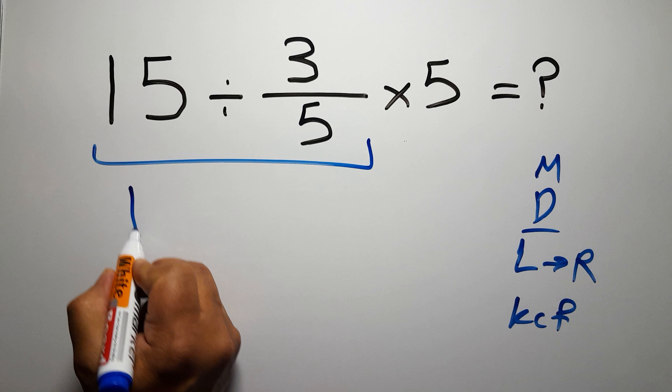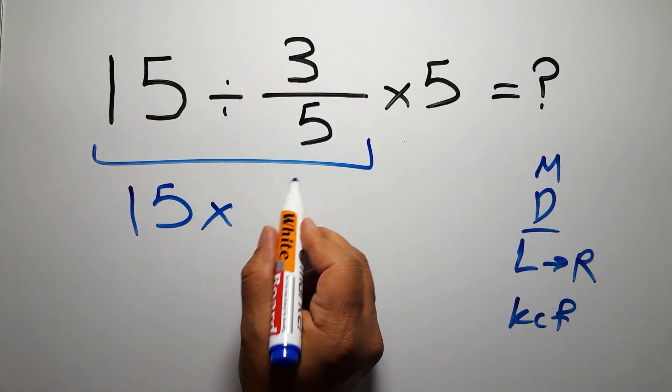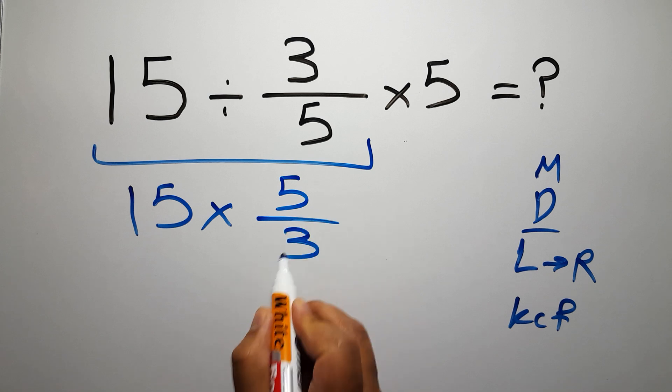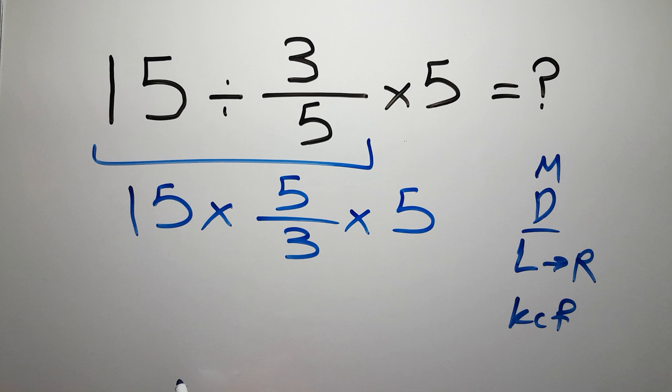We can write, keep the first fraction, change division to multiplication, and flip the second fraction. So, 15 times 5 over 3, then times 5. No.